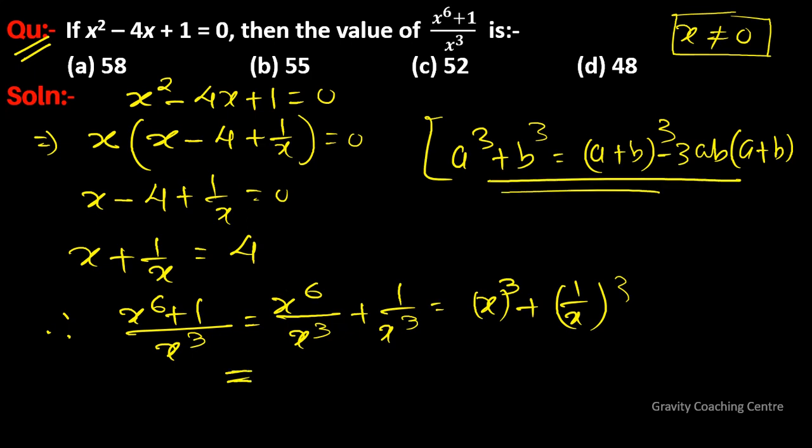So we have (x + 1/x)³ minus 3 times x times 1/x times (x + 1/x). The x cancels.